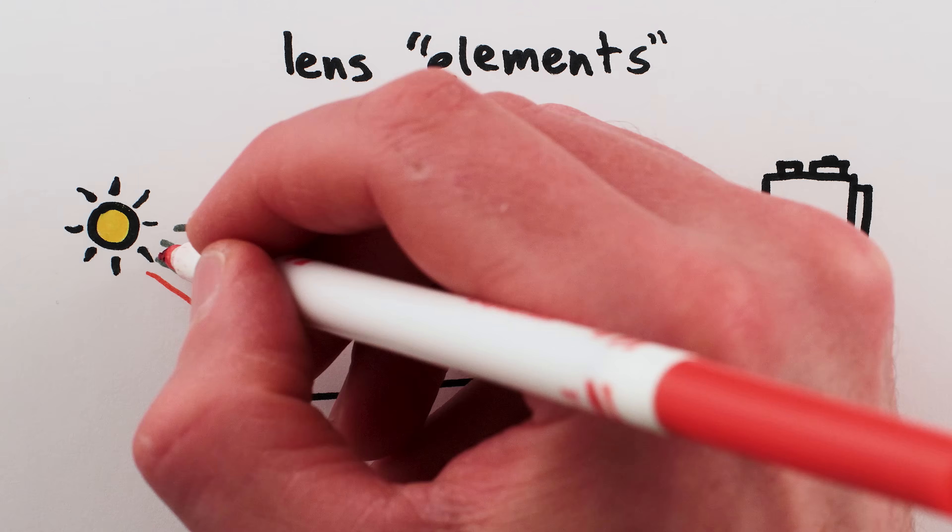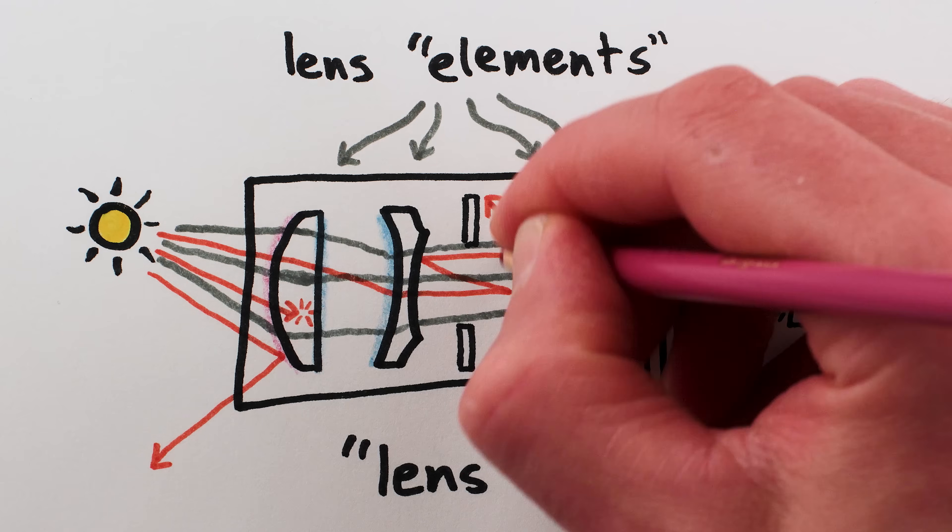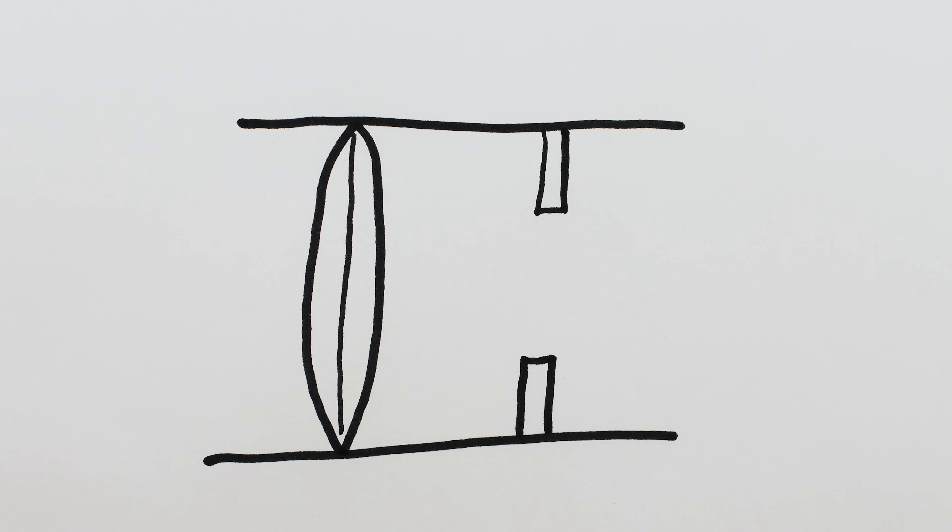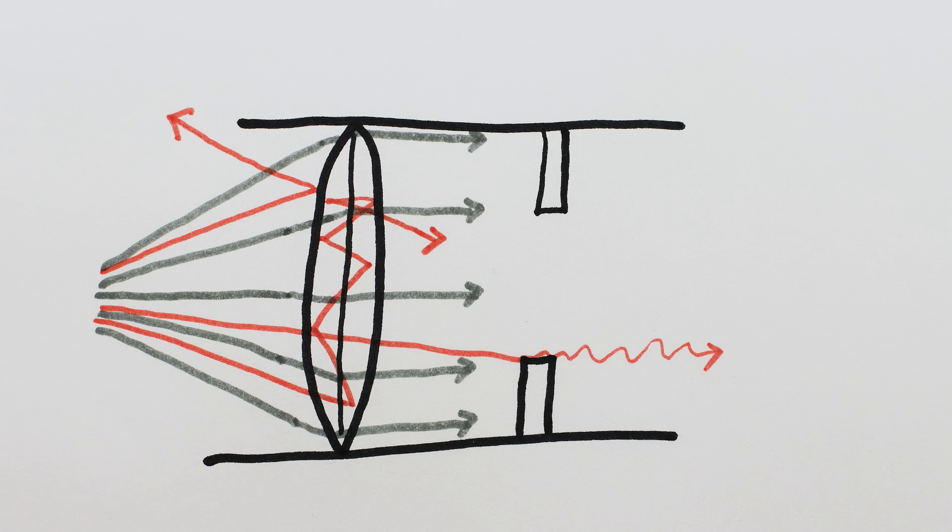But physics is annoying, glass likes to reflect and absorb and scatter light as well as transmit it. And no matter how careful you are with anti-reflective coatings, no lens is perfect. Every single lens element, including the aperture, will in principle incorrectly reflect or scatter or diffract a small amount of all the light that hits it.